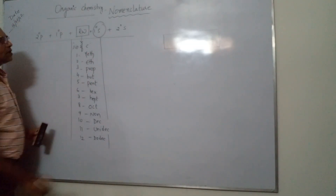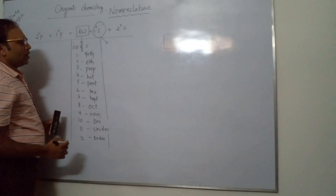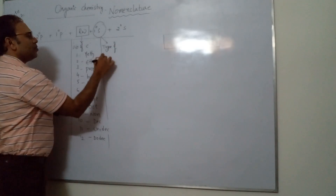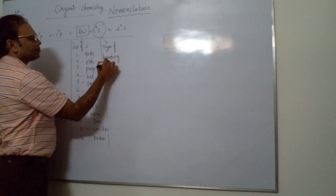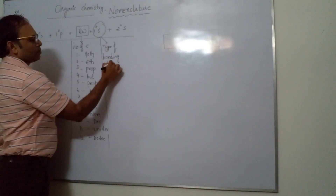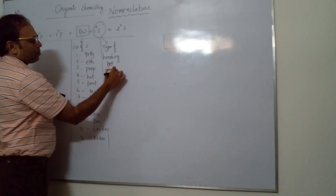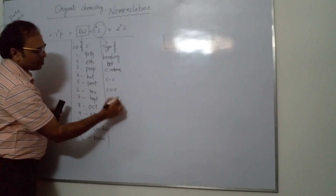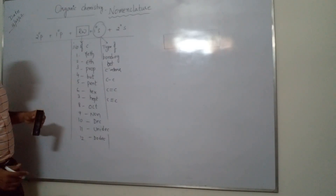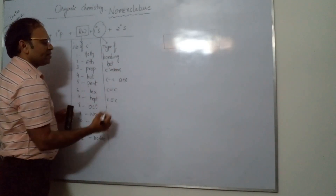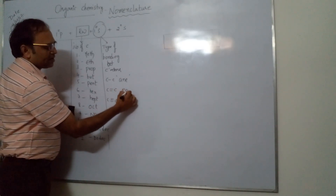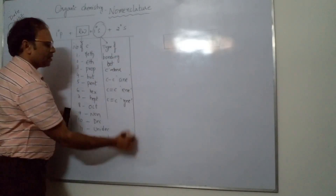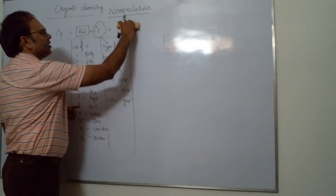Anything written after the root word is called the primary suffix. The primary suffix indicates the type of bonding between carbon atoms. For a C single bond C, the suffix is 'ane'; for a C double bond C, the suffix is 'ene'; and for a C triple bond C, the suffix is 'yne'.